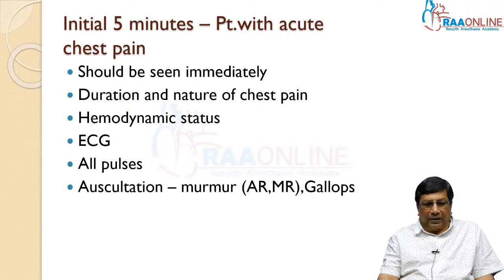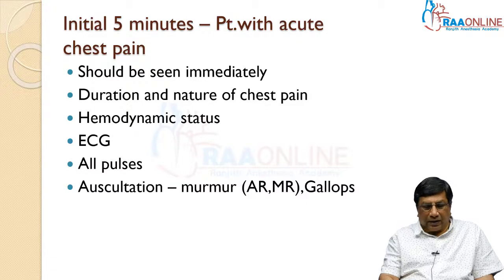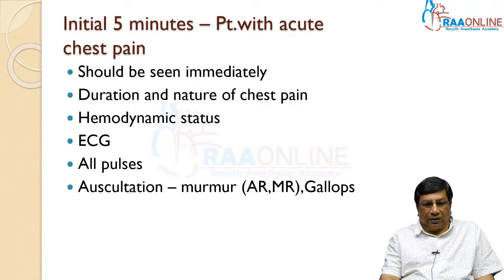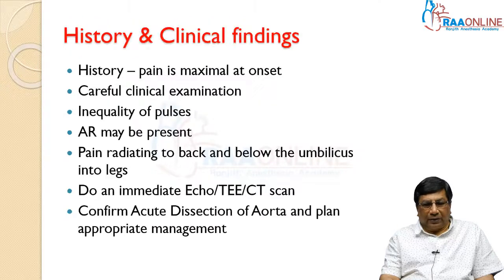With any acute chest pain, you have to feel all the pulses and also auscultate for a murmur — like aortic regurgitation or mitral regurgitation — or check for a third or fourth heart sound. All these things should be done within the initial five minutes of the patient presenting with acute chest pain.